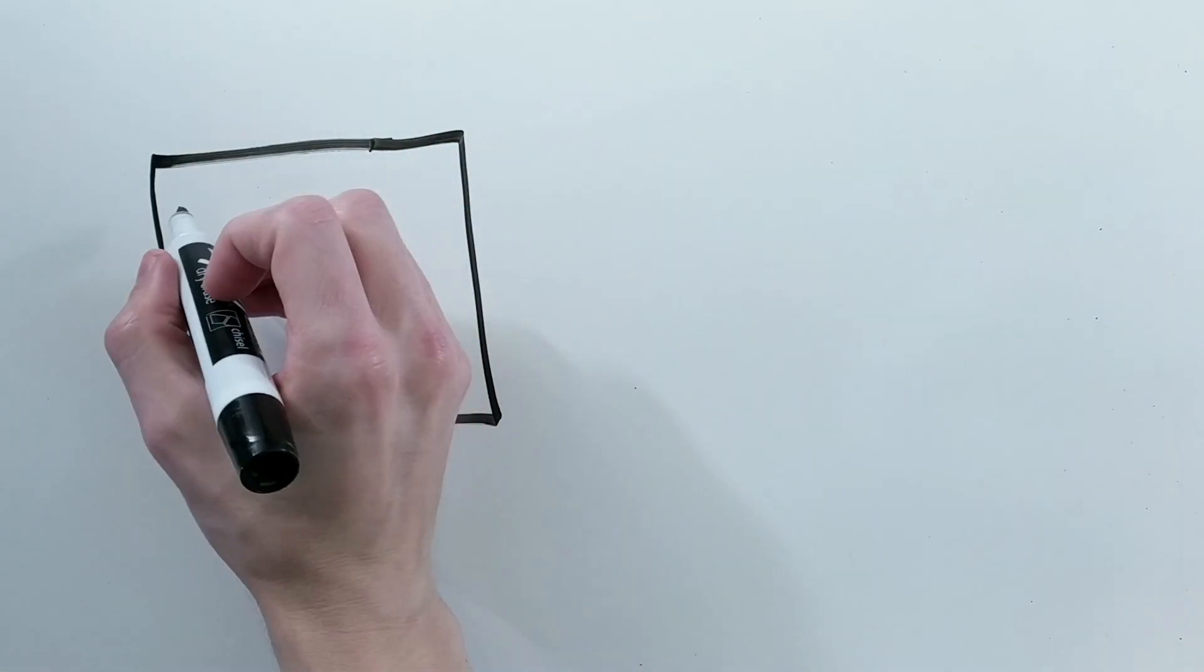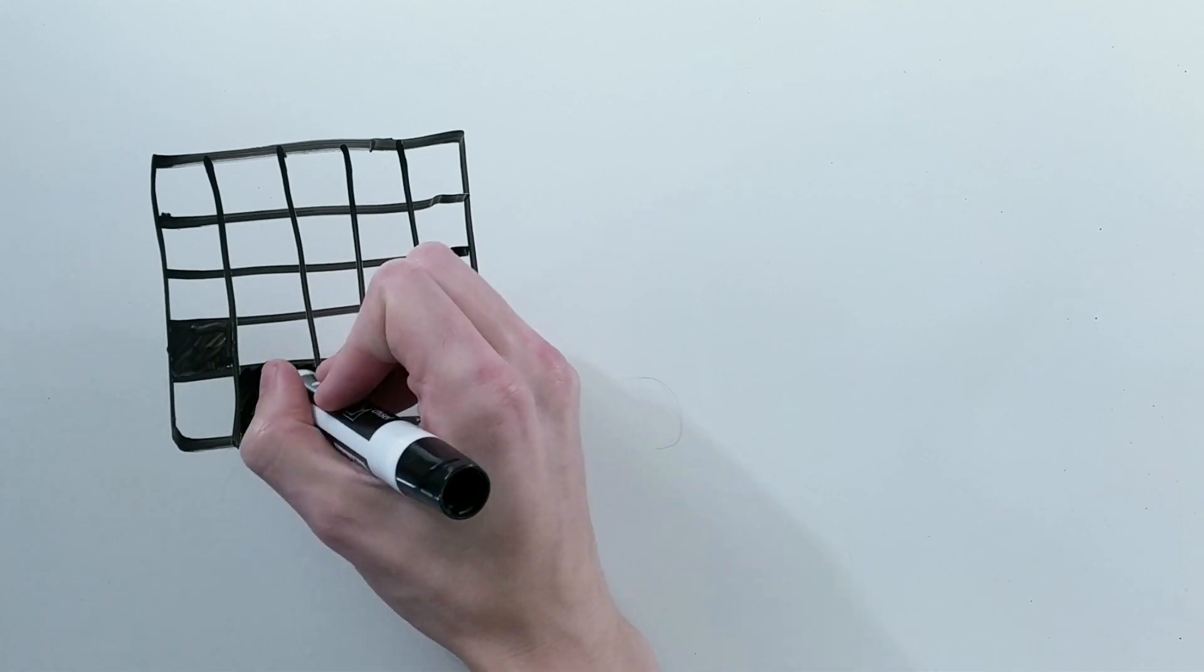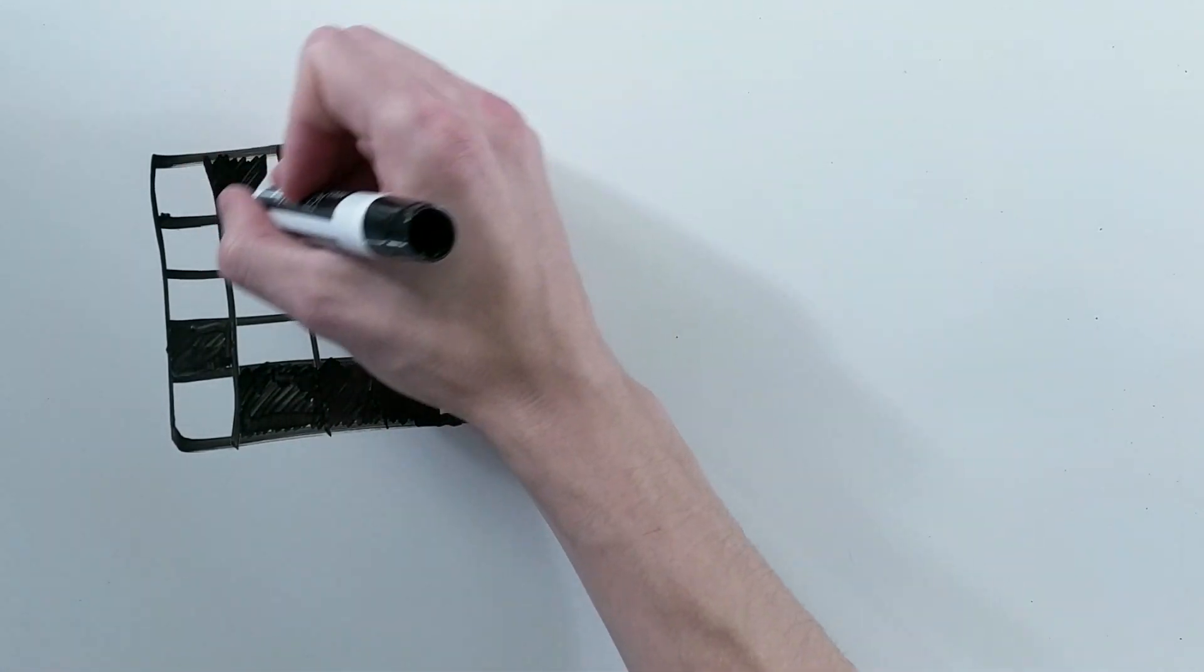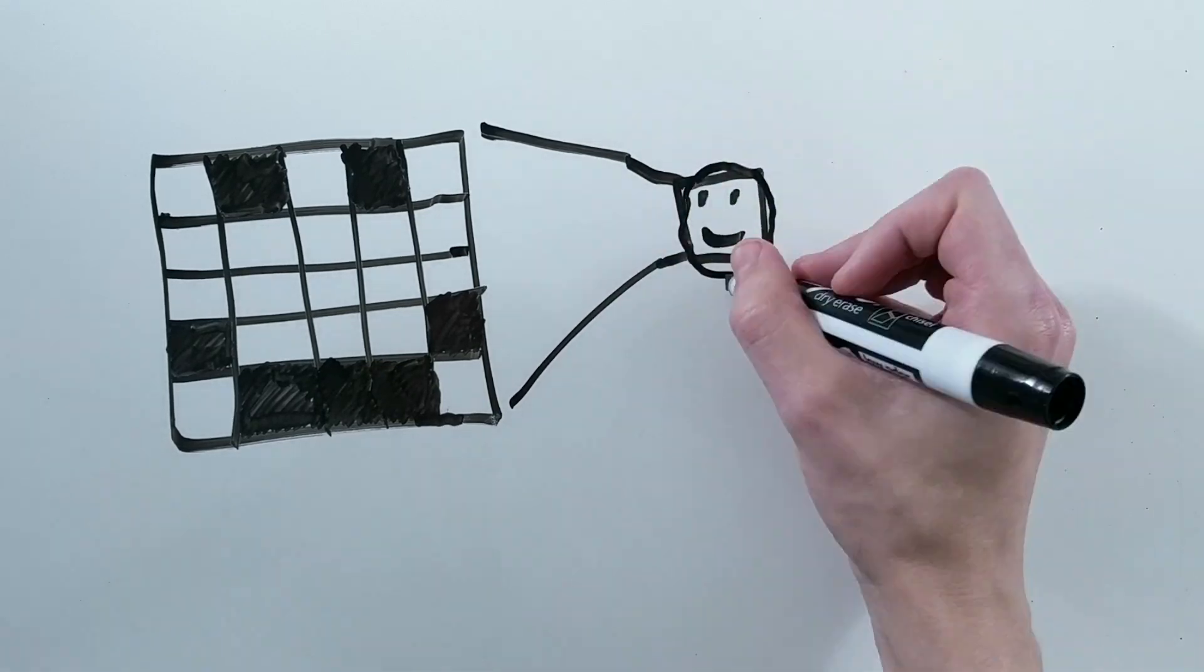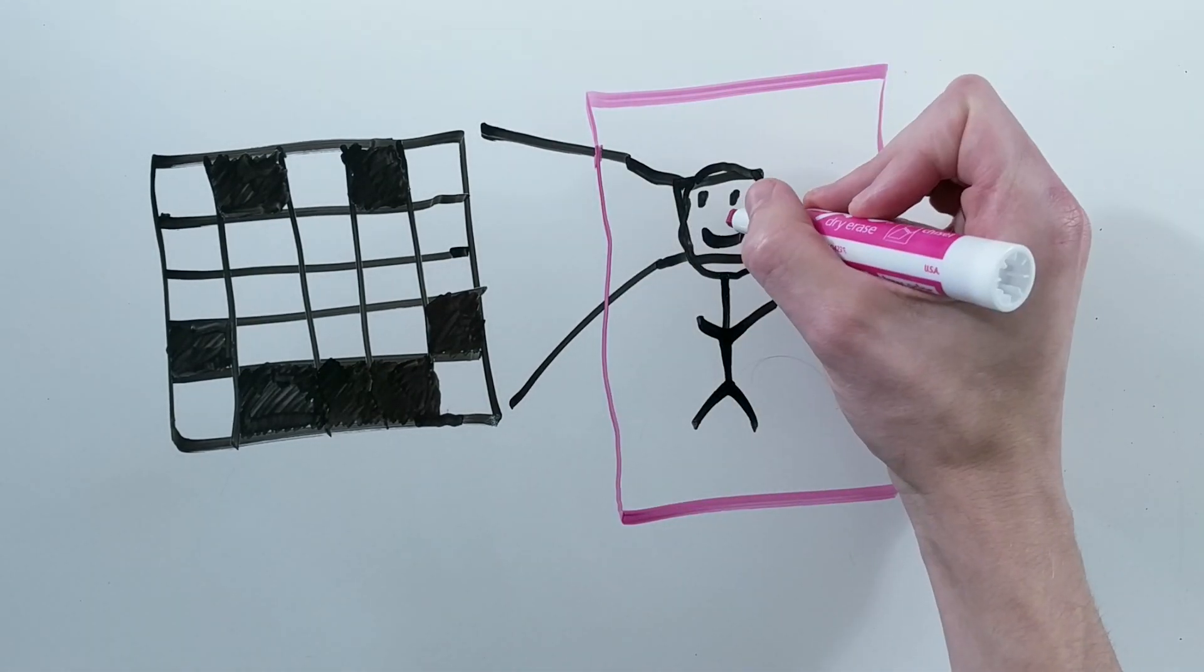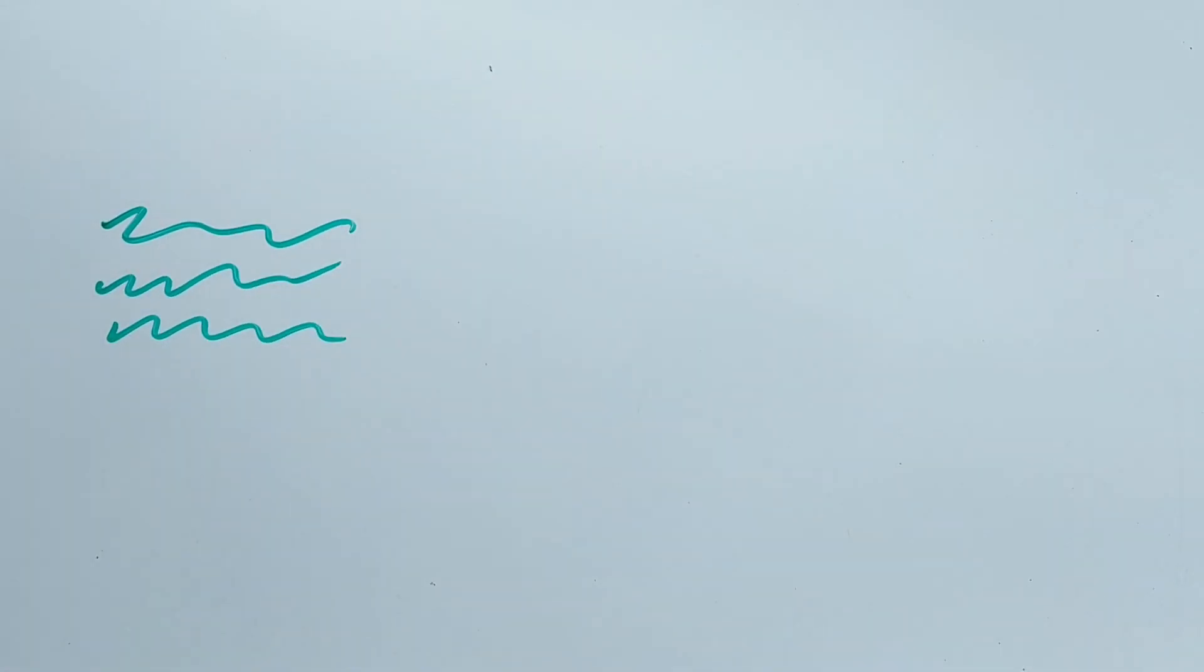By building out our convolutional neural networks in this way, we inherently add a sense of structure to our network. Pixels that are closer together tend to be more related to each other than random pixels across an image.